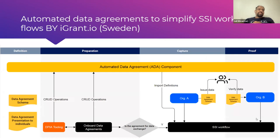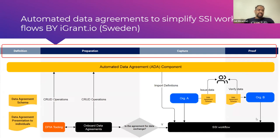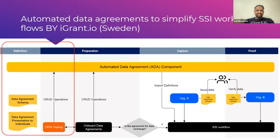For any data agreement to be created and to have the receipt, it undergoes a number of steps. The very top part depicts four different phases typical in a data agreement lifecycle: starting with definition, preparation, capture, and proof. The definition and preparation phases are primarily performed by the organization itself, while capture is towards the individual, and proof can be performed by anybody including an independent third-party auditor.